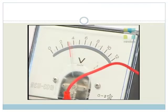as we can see, the reading on the voltmeter is less than 4.5 volts. This tells us that the cells have internal resistance.